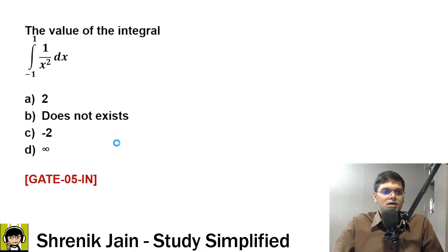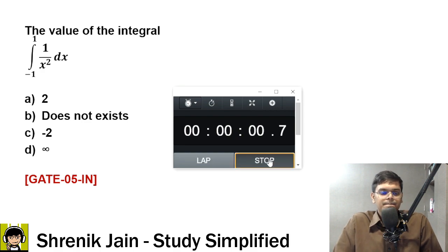The integral from -1 to 1 of dx over x squared. A, B, C, or D? Now this is a very controversial question, but I have explained this question in class and I hope you remember. Improper integration, varieties of questions I have solved.